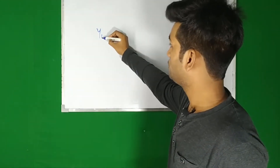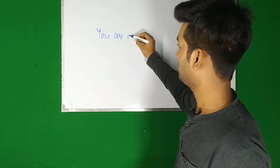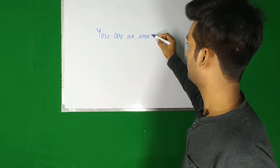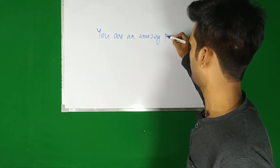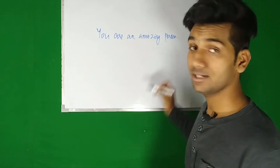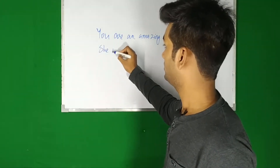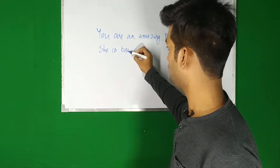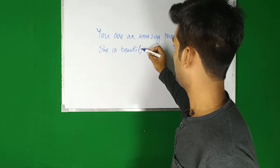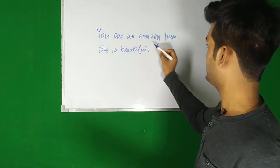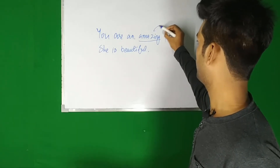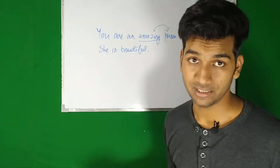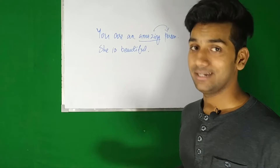Let me give you some examples to make you understand. 'You are an amazing person.' And 'She is beautiful.' In the first example, 'amazing' is my adjective, giving information about the noun 'person' - modifying it. In the second example, 'beautiful' is the adjective giving information about the pronoun 'she.'